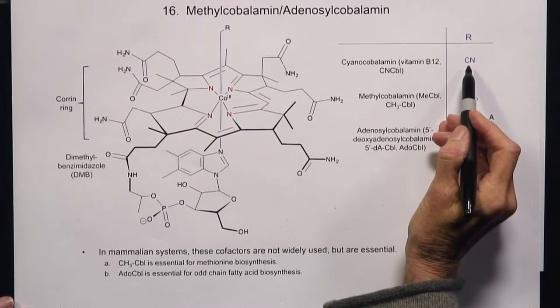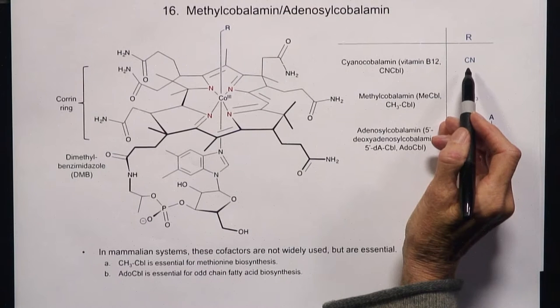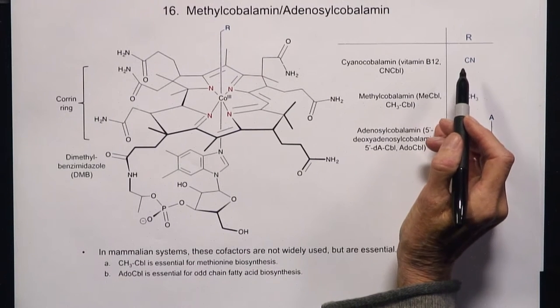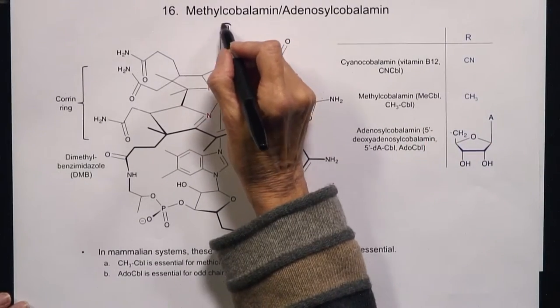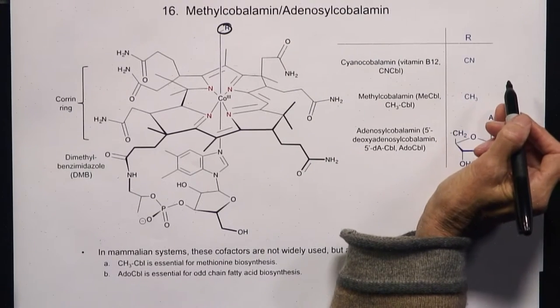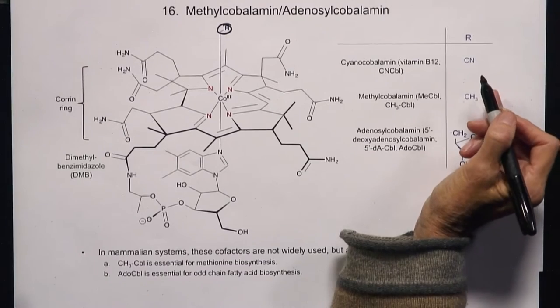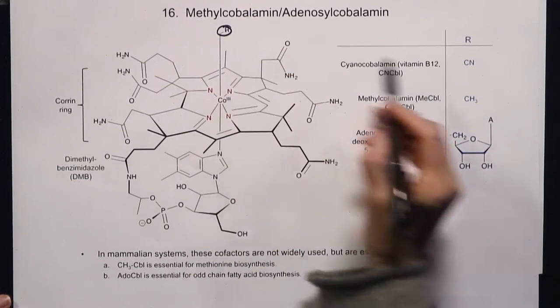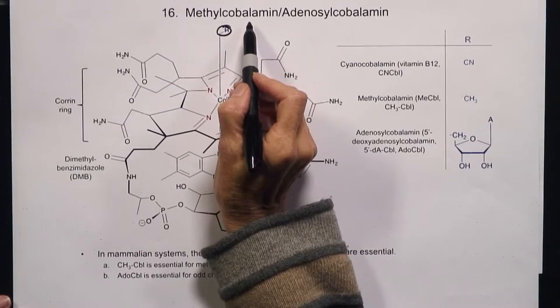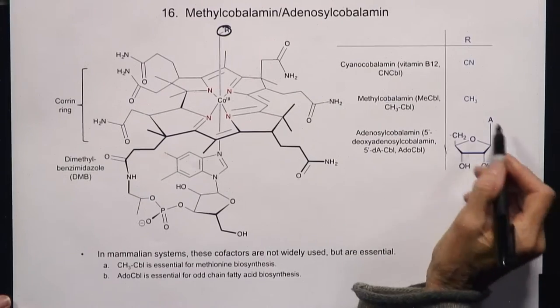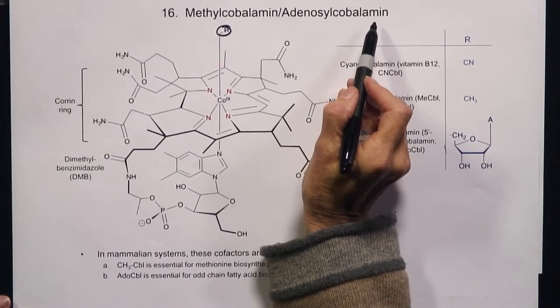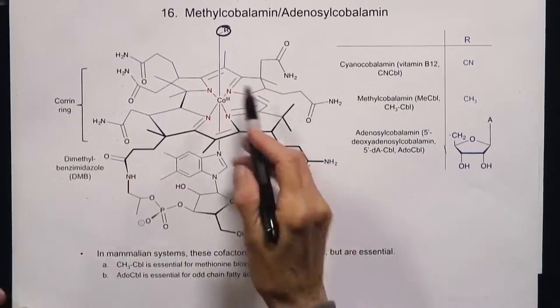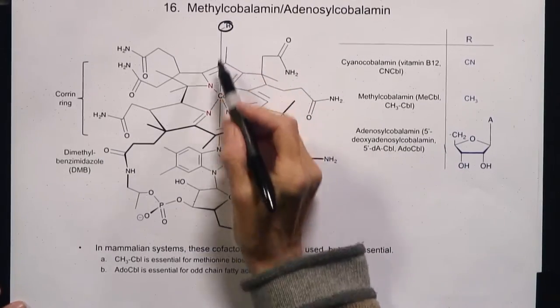I want to introduce you to this corrin ring and what's unusual about it compared to protoporphyrin 9. The vitamin, as in the case of all vitamins we've talked about over the course of the semester, is not the actual cofactor used in the enzymatic transformation. The vitamin, which in this case would have this group replaced with cyanide, is vitamin B12. The actual cofactors that bind to the enzyme have that cyanide replaced with either a methyl group — that's called methylcobalamin — or with 5'-deoxyadenosine, and that's called adenosylcobalamin. The only thing that's distinct is the axial ligand.